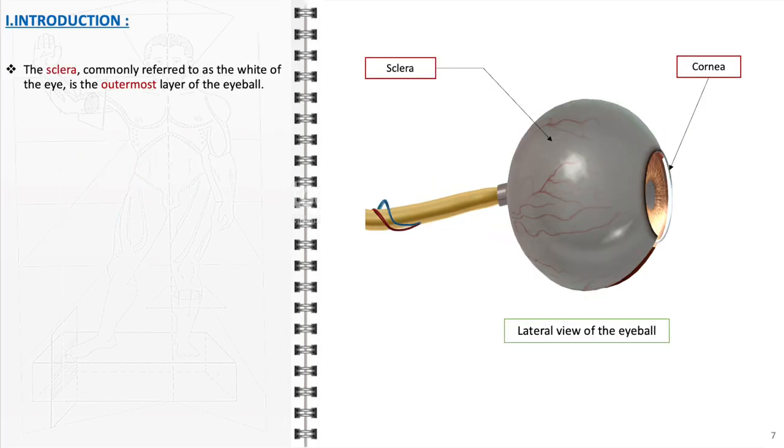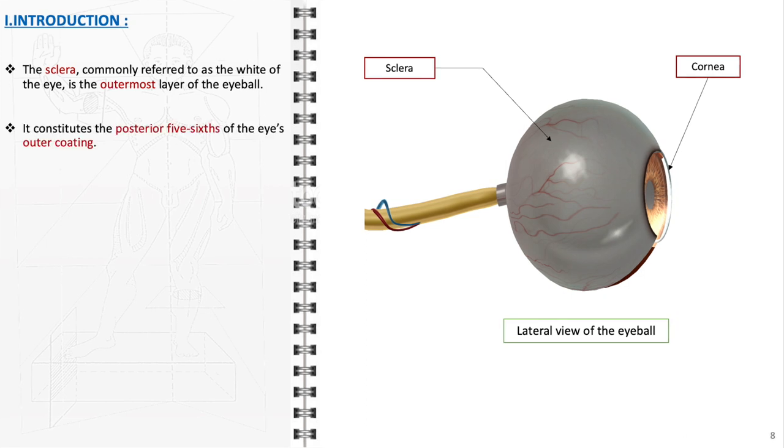The sclera, commonly referred to as the white of the eye, forms the outermost layer of the eyeball. It constitutes the posterior five-sixths of the eye's outer layer, creating a robust protective shield.